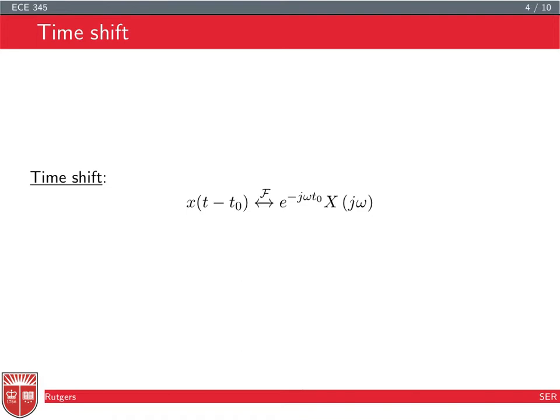So in the Fourier transform, the delayed signal has the same magnitude — the magnitude does not change — but what changes is the phase. There is a phase that is proportional to the delay, so it's omega times t0.